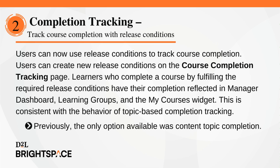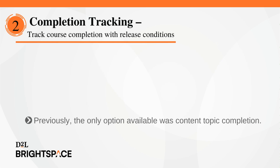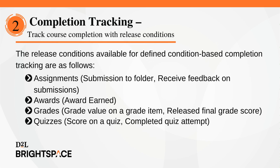Users can now use release conditions to track course completion. Users can create new release conditions on the course completion tracking page. Learners who complete a course by fulfilling the required release conditions have their completion reflected in Manager Dashboard, Learning Groups, and the My Courses widget. This is consistent with the behavior of topic-based completion tracking. Previously, the only option available was Content Topic Completion. The release conditions available for defined condition-based completion tracking include: Assignments, Submission to Folder, Received Feedback on Submissions, and Awards, Award Earned.